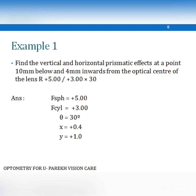In Example 1, find the vertical and horizontal prismatic effect at a point 10 mm below and 4 mm inward from the optical center, where the power of the lens is +5.00 / +3.00 × 30° in front of the right eye. The spherical power is +5 diopters, the cylindrical power is +3 diopters, the axis angle is 30°, the horizontal distance x is 0.4 cm, and the vertical distance y is 1.0 cm.